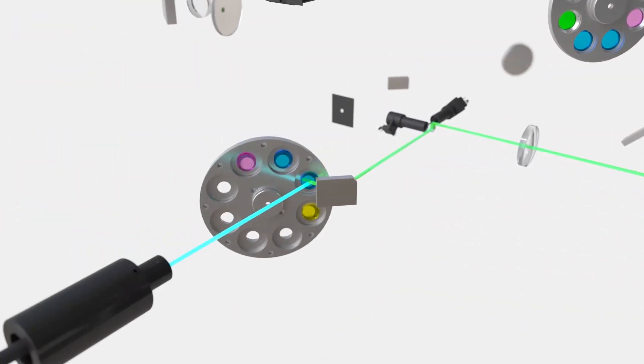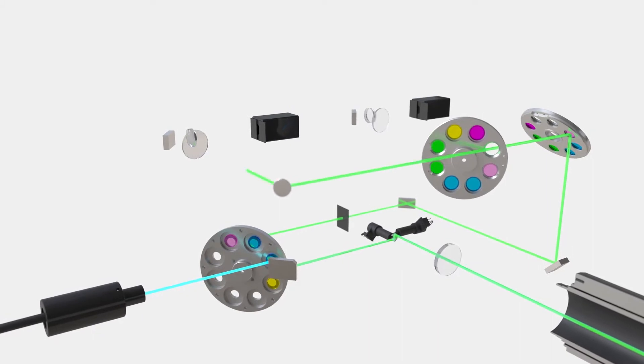Emission light passes back through the scanner along the same path as the excitation light, passing through the excitation dichroic and up to the TrueSpectral detector deck.